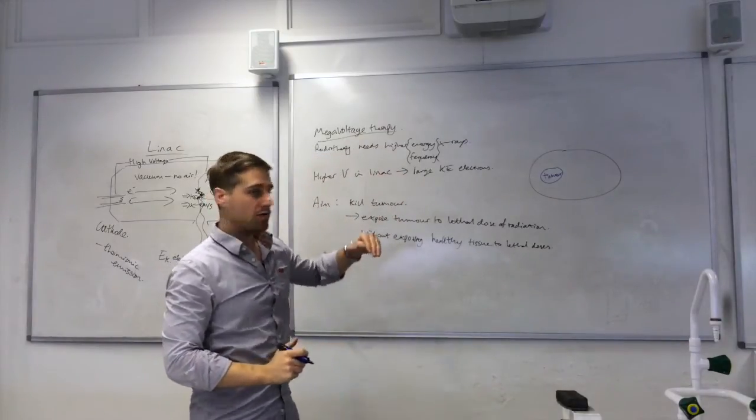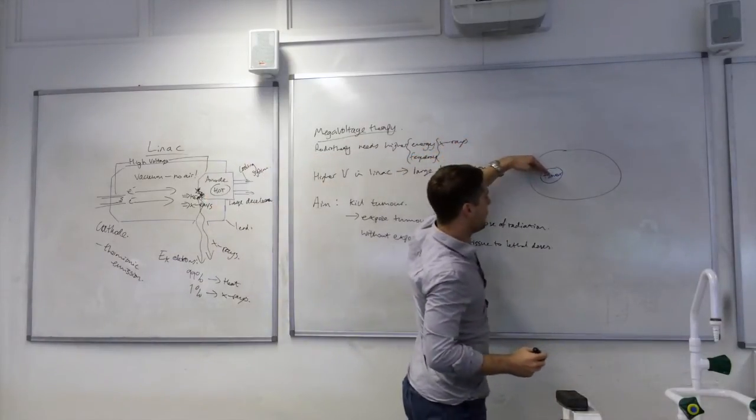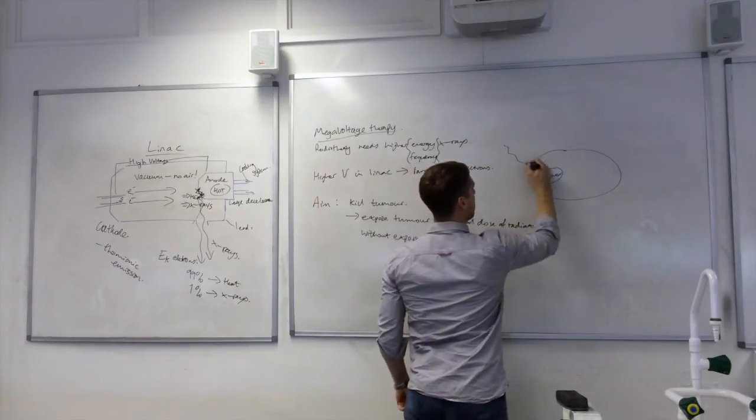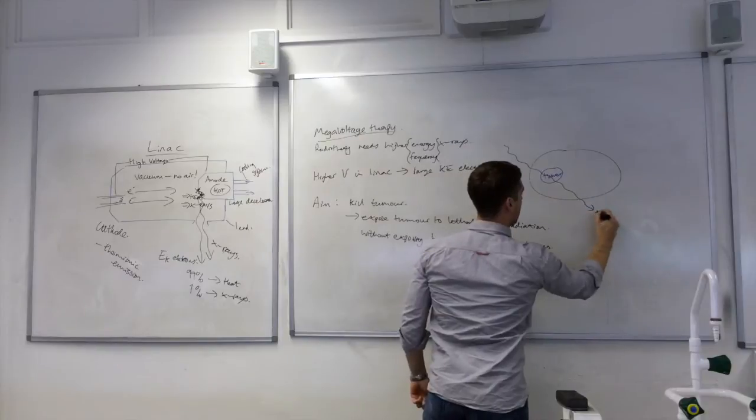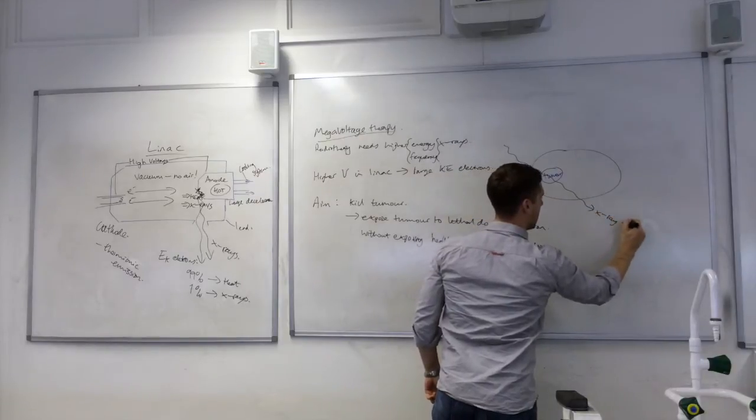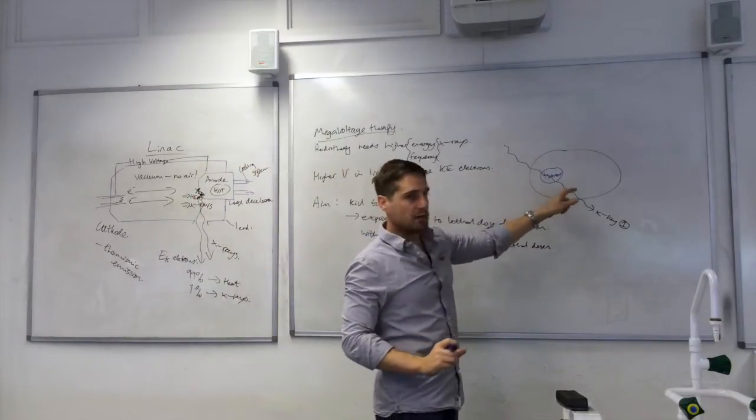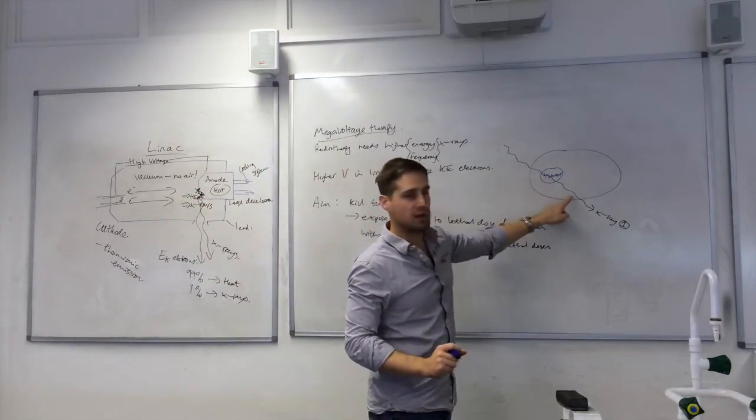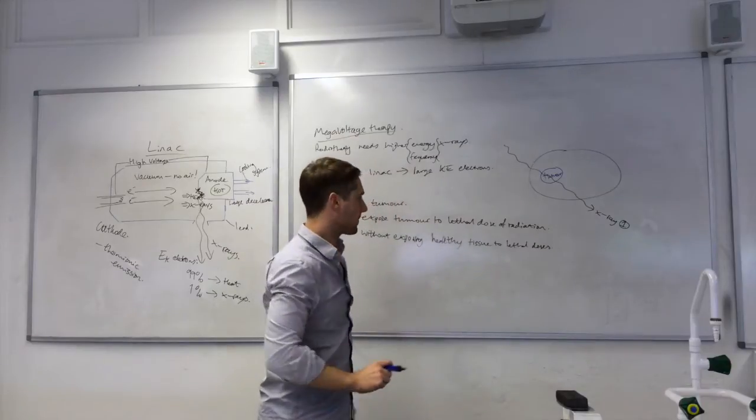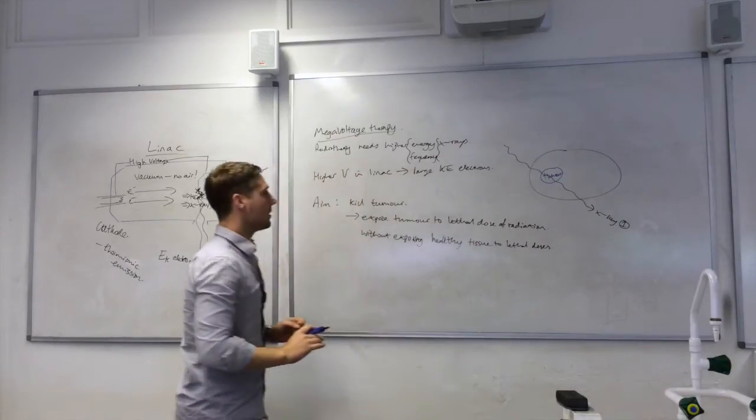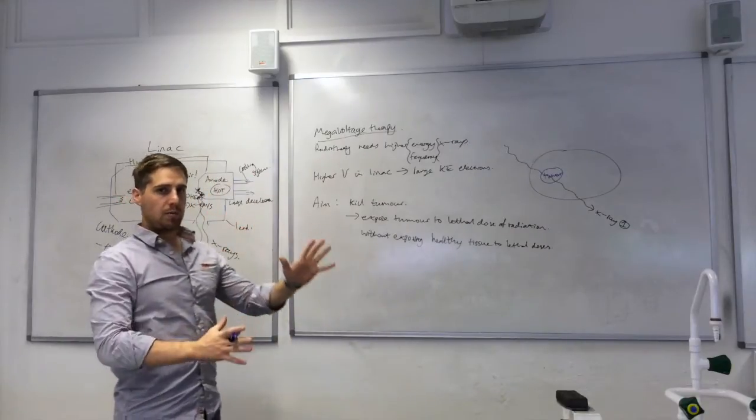Now, if we direct an X-ray beam through the body so that it targets the tumour. So, this is X-ray beam one. Now, the tumour has received the dose, but so has this healthy tissue along the path of the beam. Let's now rotate our linear accelerator into a new position. So, it was here.